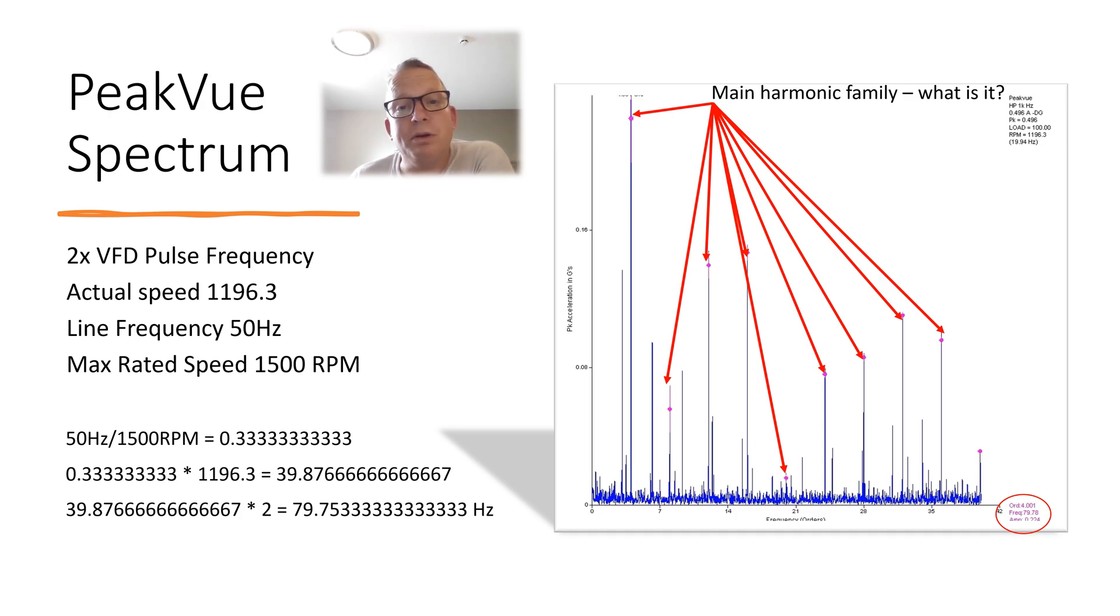So what we've got to keep an eye out for is electrical firing frequency, two times the pulse drive frequency, which can be noisy on some motors, especially if it's not got the best cables installed. 50 divided by 1500 gives us 0.333 recurring, times that by the actual speed and times by two, because we've got north and south, gives us 79.75 hertz, which is this frequency here.